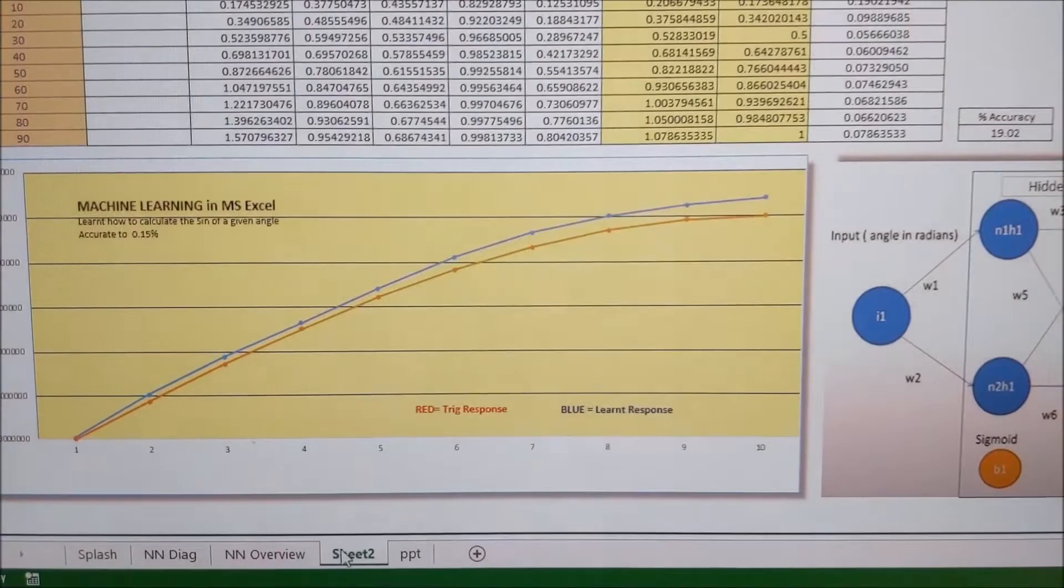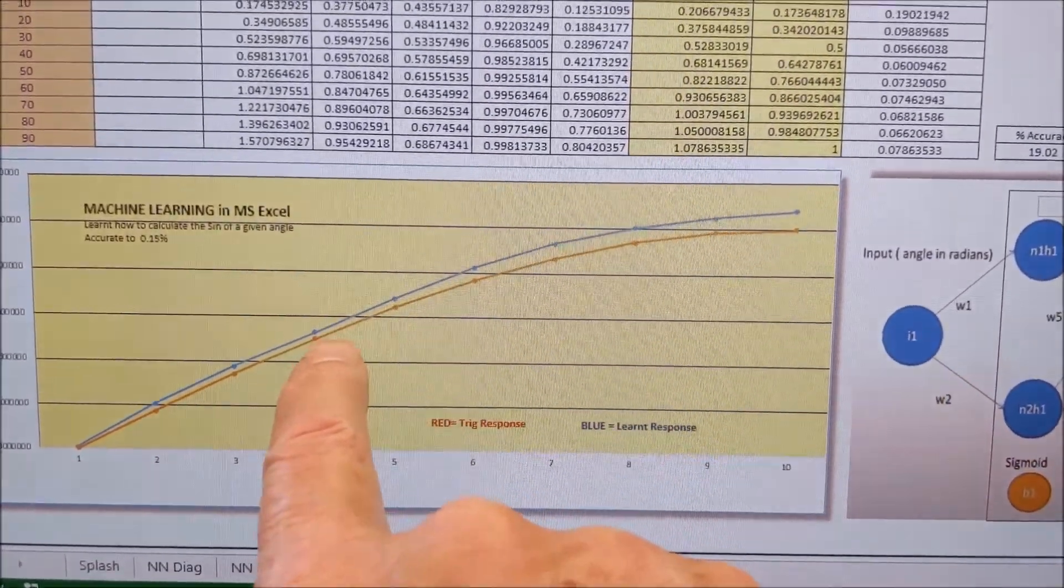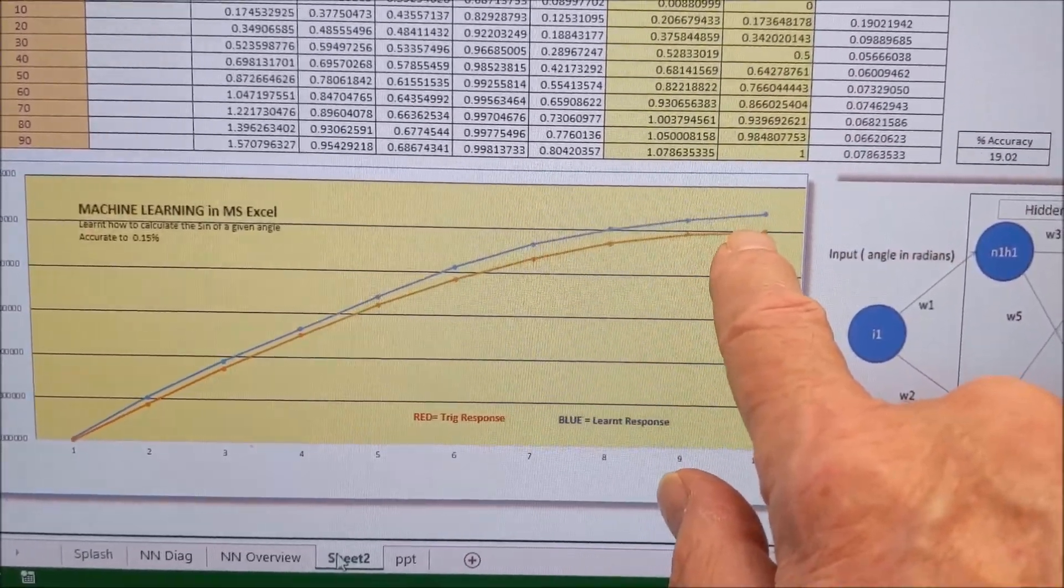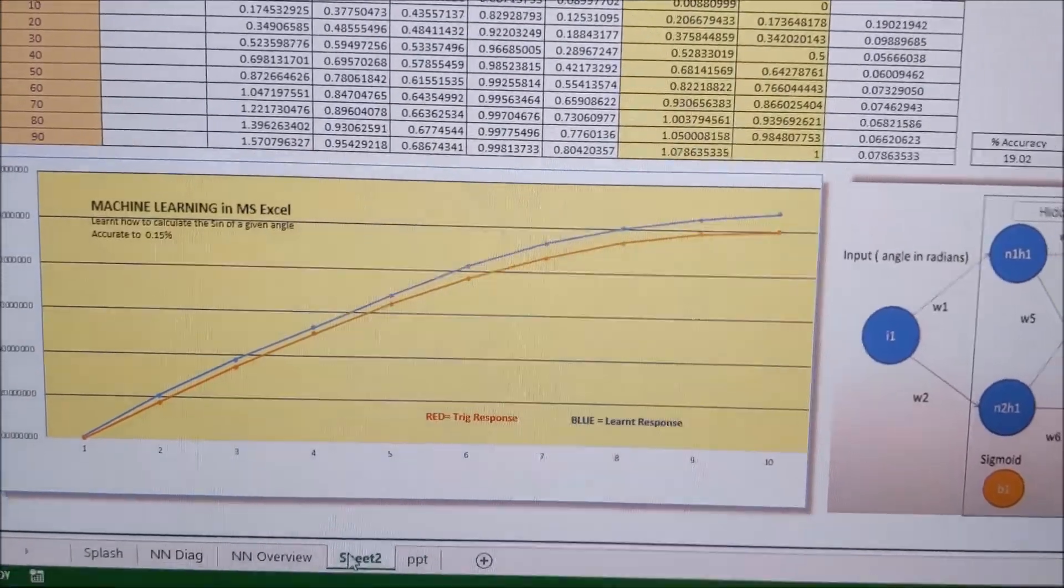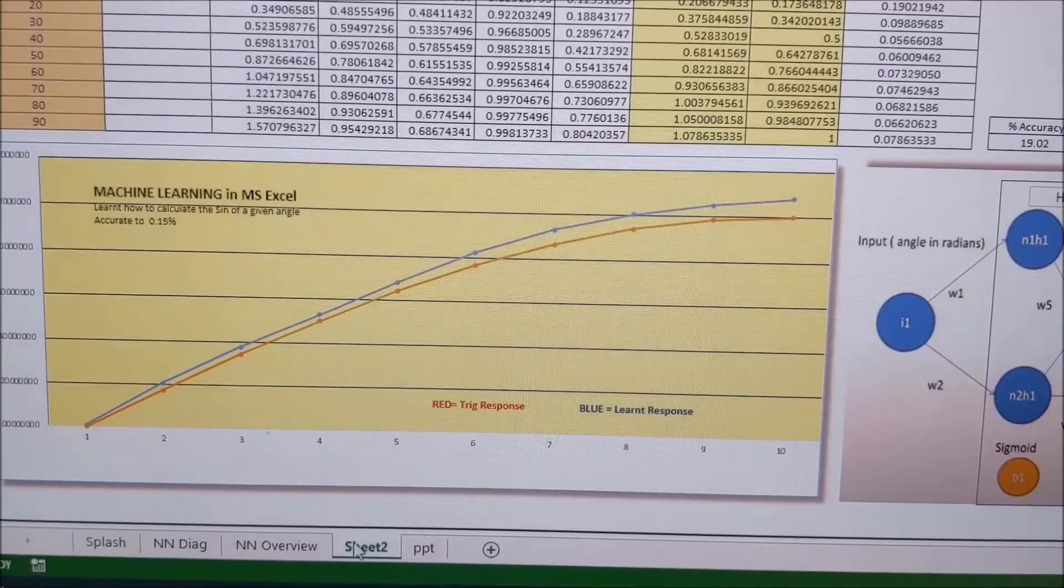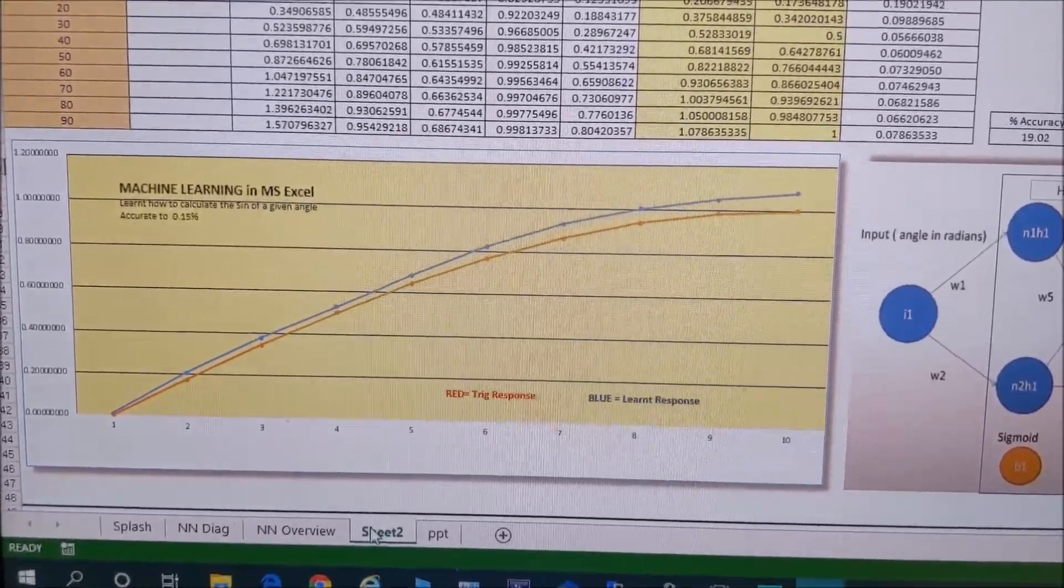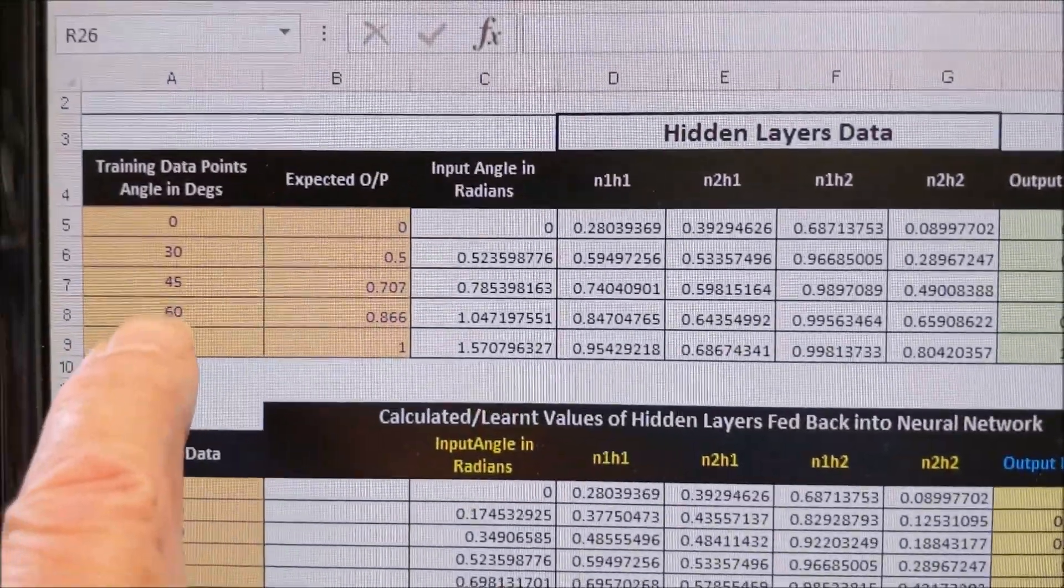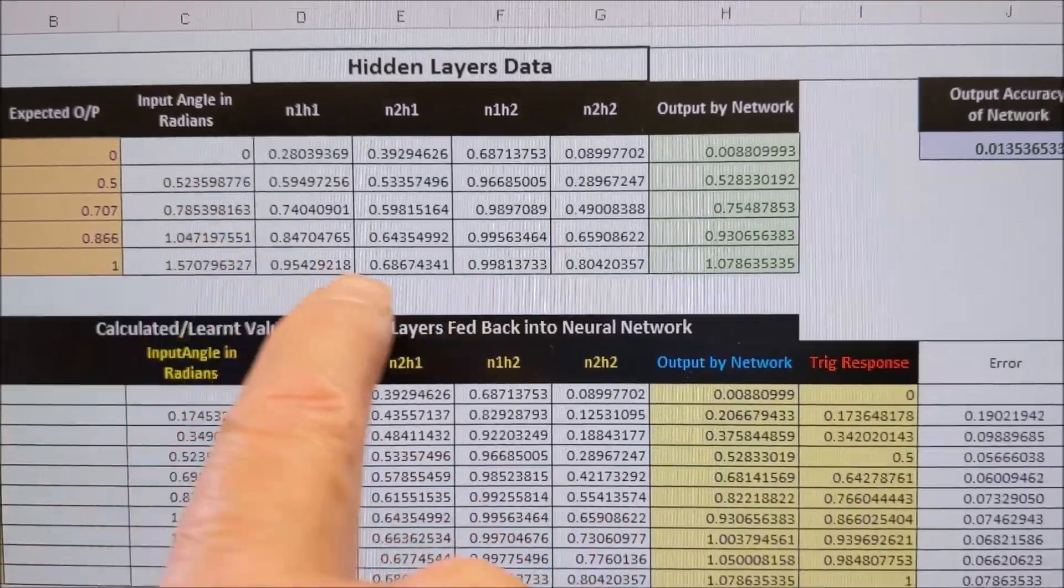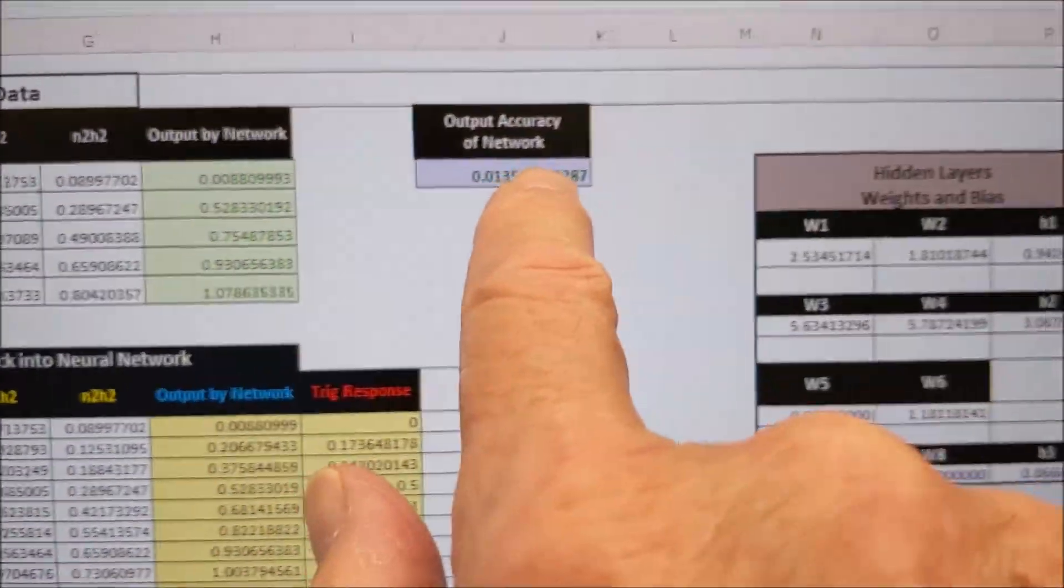So you can see what we're looking at. And there we are. So this is the red response. This is the accurate response from the trig functions. We know that's absolutely right. And this is the learning, the blue one. We're 20% out or so at the end, which is significant error. But we can improve that. These are our training points in degrees, in radians. And these are the hidden layers of data outputs, and that's the accuracy.